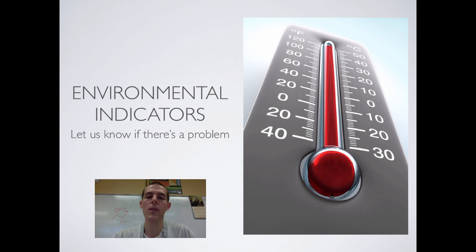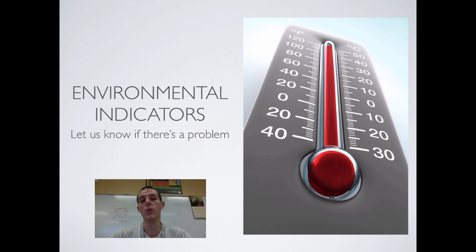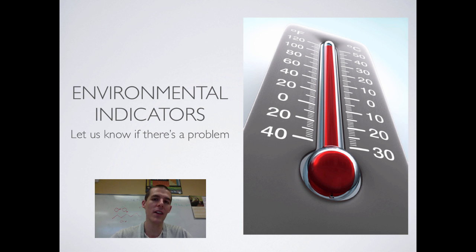Environmental scientists look at things called environmental indicators. Ecosystem services can be a type of environmental indicator, but basically environmental indicators let us know if there's a problem on Earth. There are long lists of environmental indicators in your book, but we're going to focus on five major ones today. These are things that if environmental scientists see a problem in one of these areas in an ecosystem, they know there's a problem within that ecosystem or the planet in general. Like a thermometer gauges whether something is wrong in your body, environmental indicators gauge whether something is wrong with the planet.